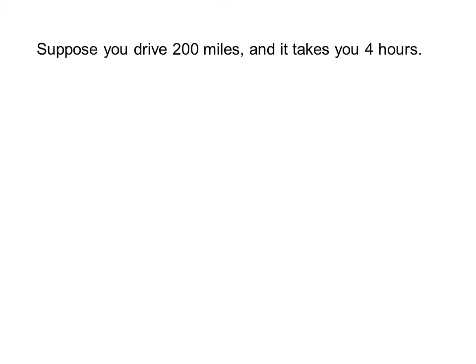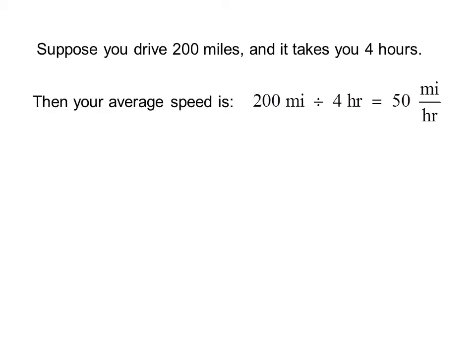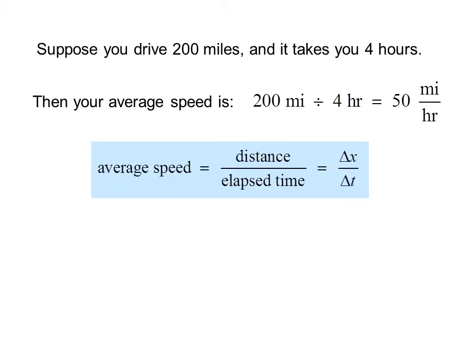Suppose you drive 200 miles and it takes you 4 hours. Then your average speed is 200 miles divided by 4 hours, which equals 50 miles per hour. Average speed equals distance divided by elapsed time, or delta x over delta t.